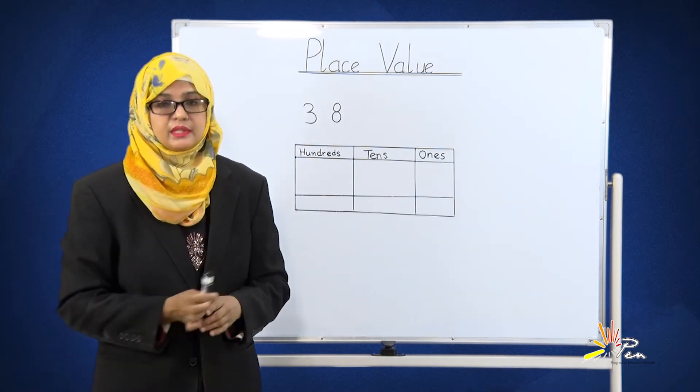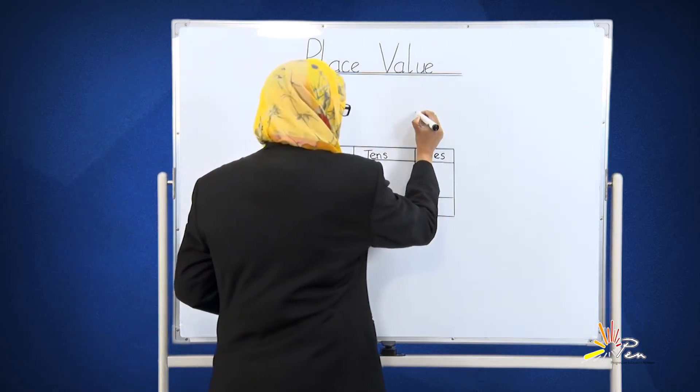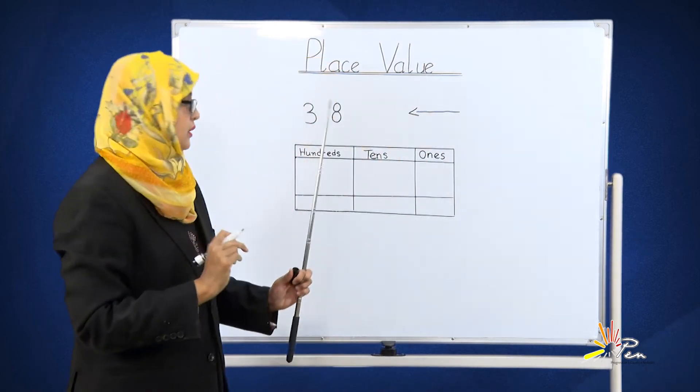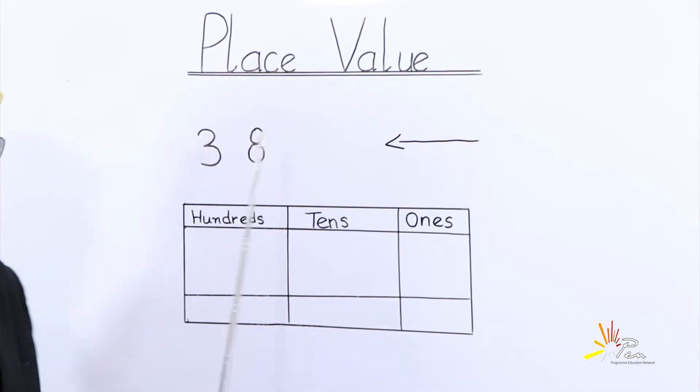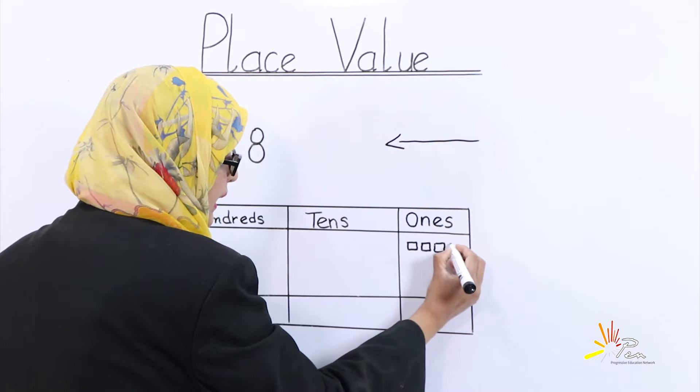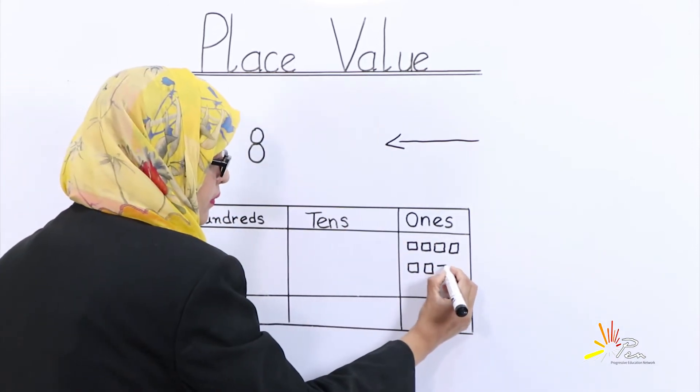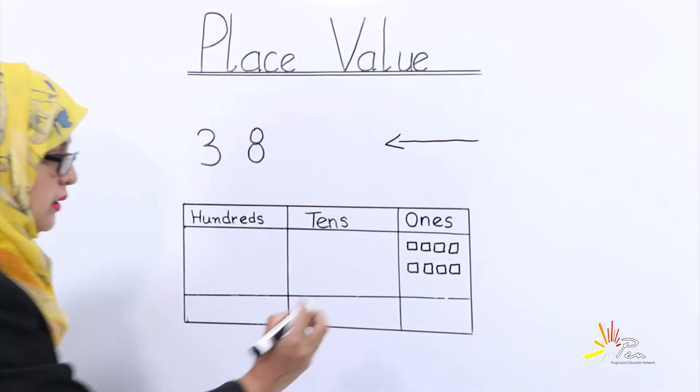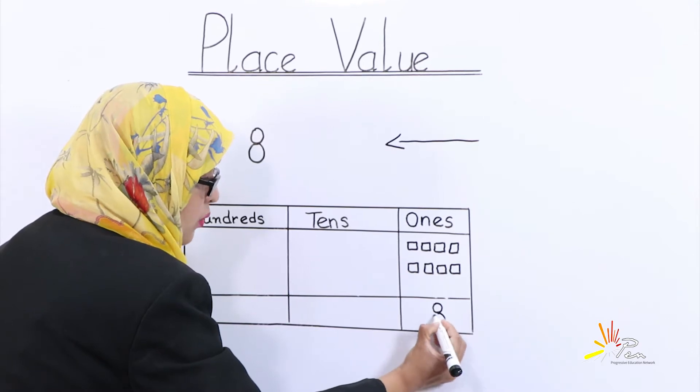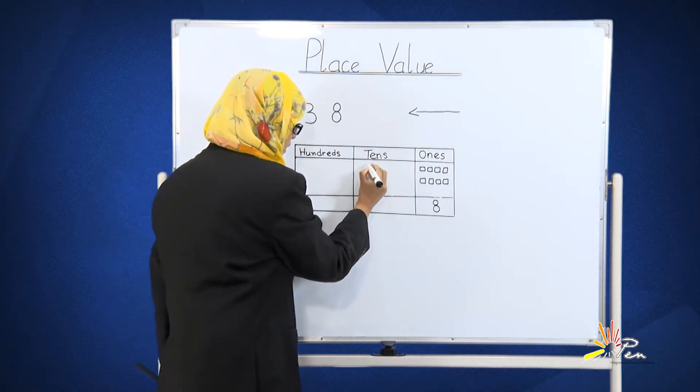What is the procedure? Let's see. We will start to count from the very first number of the right hand side. The first number is 8. Eight will be written in the ones place. If you want to draw something like these small beads, we have eight at ones. Now we are going to talk about three.